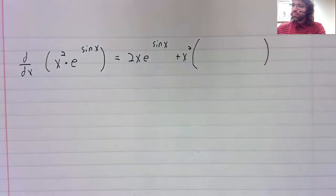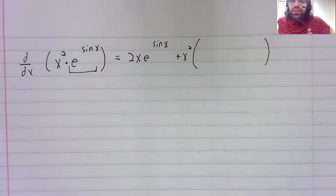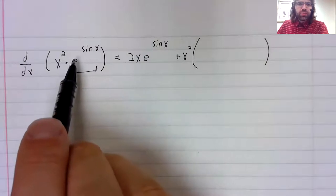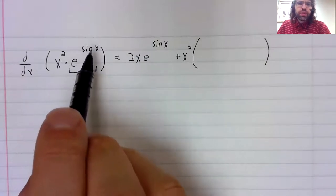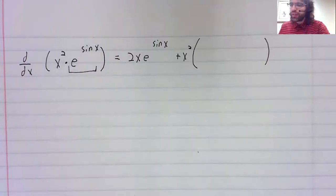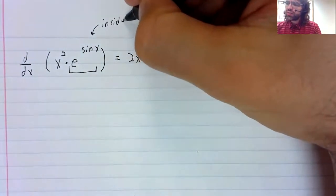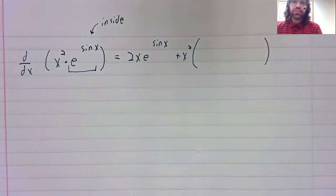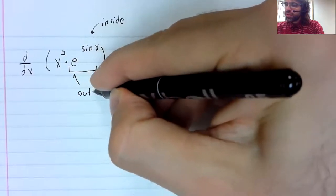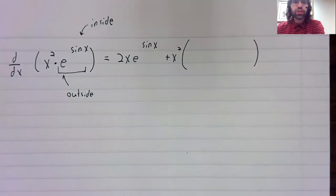Now, we need to differentiate this. And this is a chain rule problem. You've got the exponential function with another function stuck inside of it. So in this context, the sine is the inside function. The exponential is the outside function.